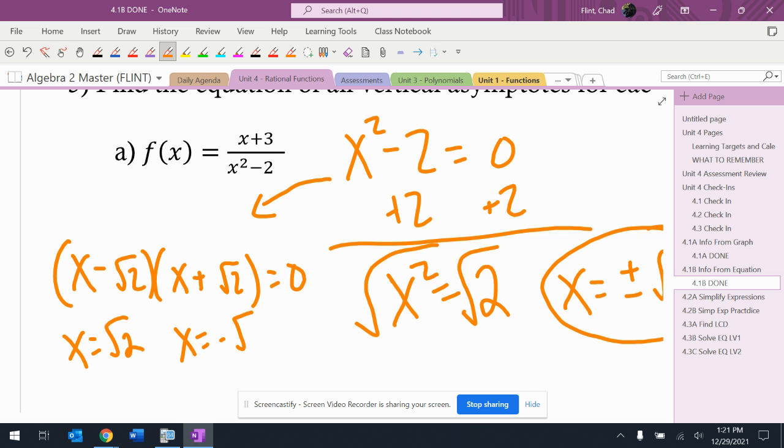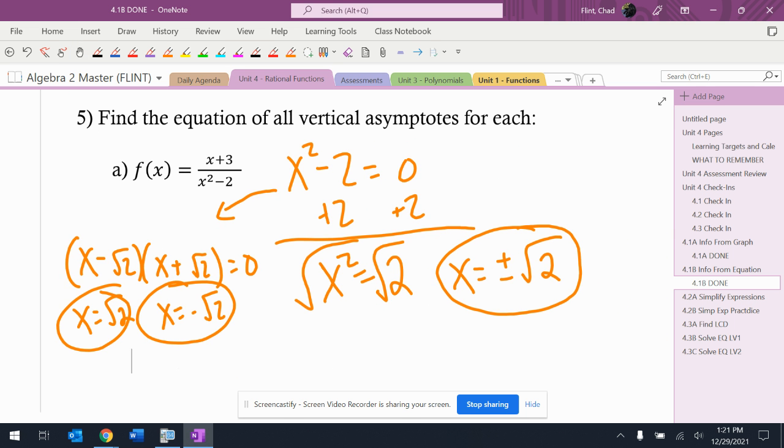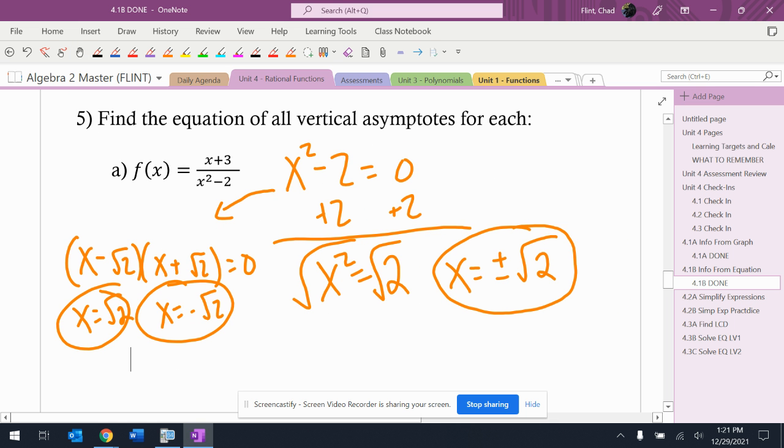This is going to give me x equals negative square root of two, which is the same answer I just got. So even if it's not difference of two perfect squares, you can still do it. It still works.